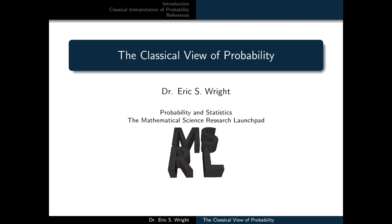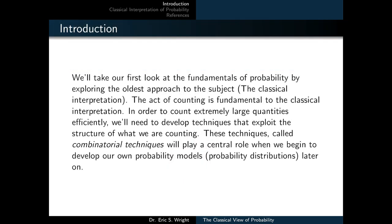Welcome to The Classical View of Probability, a video lesson on probability and statistics. We'll take our first look at the fundamentals of probability by exploring the oldest approach to the subject, the classical interpretation. The act of counting is fundamental to this interpretation. To count extremely large quantities efficiently, we'll need to develop combinatorial techniques that exploit the structure of what we're counting. These techniques will play a central role when we develop probability models and distributions later on.